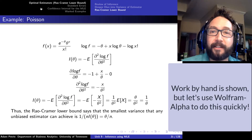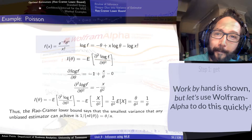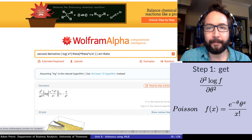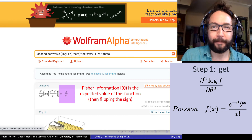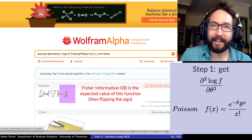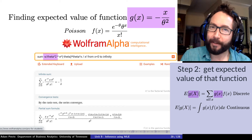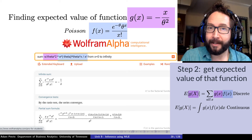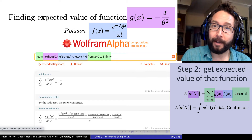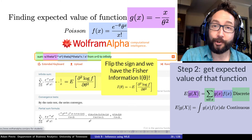As a brief example, consider the Poisson distribution, whose formula is e to the minus theta times theta raised to the x over x factorial. We can ask Wolfram Alpha to take the second derivative of the log of the Poisson formula with respect to theta, and we find this equals minus x over theta squared. The Fisher information asks us to find the expected value of this function, flip the sign, and that gives us I(theta). We multiply minus x over theta squared by the Poisson PMF and sum over all possible values of x from 0 to infinity, giving an expected value of minus 1 over theta. Flipping the sign, the Fisher information is 1 over theta.